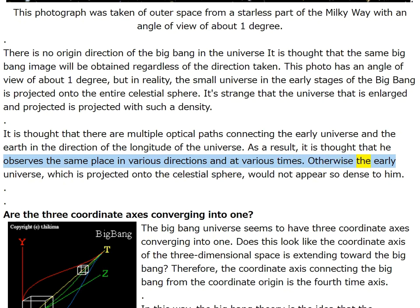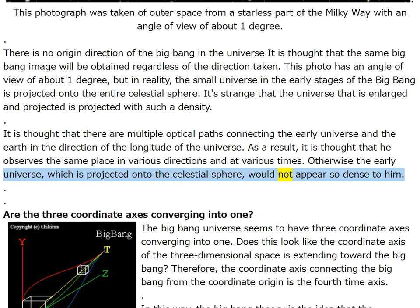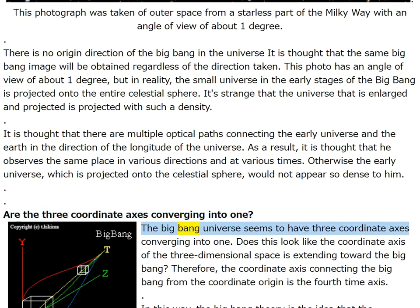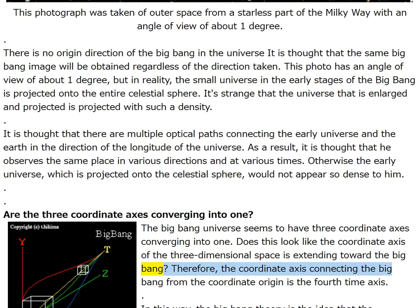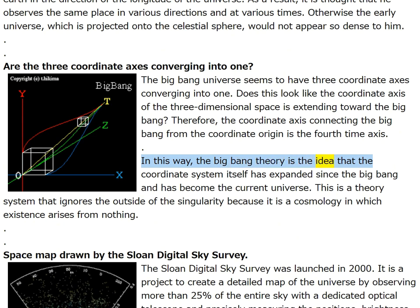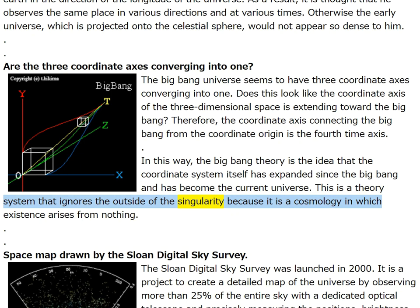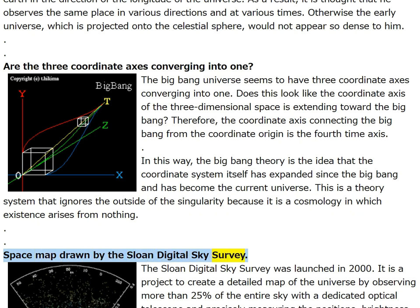Otherwise the early universe, projected onto the celestial sphere, would not appear so dense. The big bang universe seems to have three coordinate axes converging into one — the coordinate axis connecting the big bang from the coordinate origin is the fourth time axis. The big bang theory is the idea that the coordinate system itself has expanded since the big bang and has become the current universe — a theory system that ignores the outside of the singularity, because existence arises from nothing.